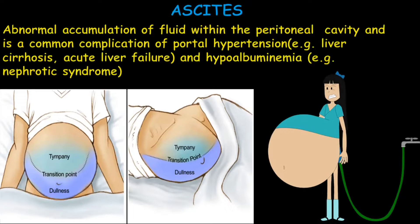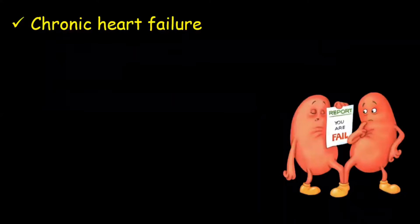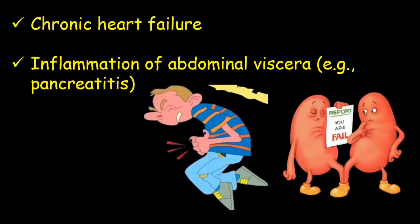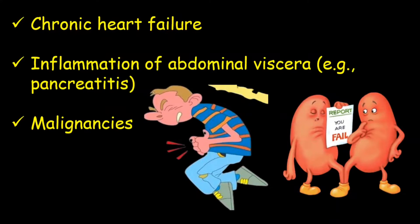Next we have hypoalbuminemia. In hypoalbuminemia, ascites occurs due to nephrotic syndrome. We have many other conditions as well, including chronic heart failure and inflammation of abdominal viscera like pancreatitis, and malignancies.